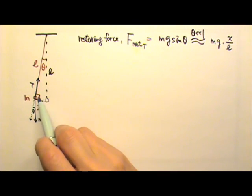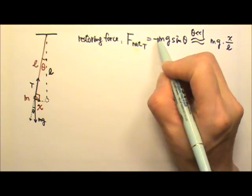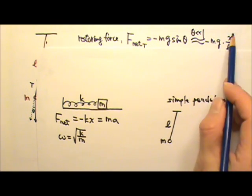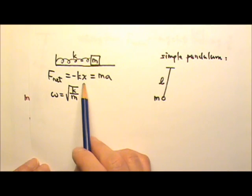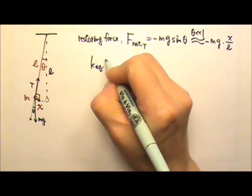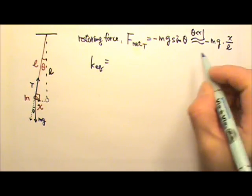Because this is a restoring force, we can put the negative sign here. If we want to match this restoring force to the negative kx format, that means our k equivalent is mg over L.